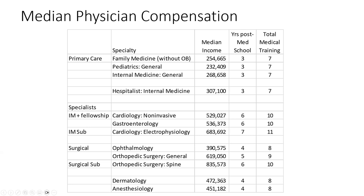A relatively new innovation is the hospitalist — an internal medicine doctor who decides not to do outpatient practice but instead works for a hospital. Whenever a patient is admitted, the hospitalist becomes their primary doctor and oversees their medical care. Hospitalists tend to make about $307,000, quite a bit more than their outpatient colleagues, because hospital care generates some really big bills.